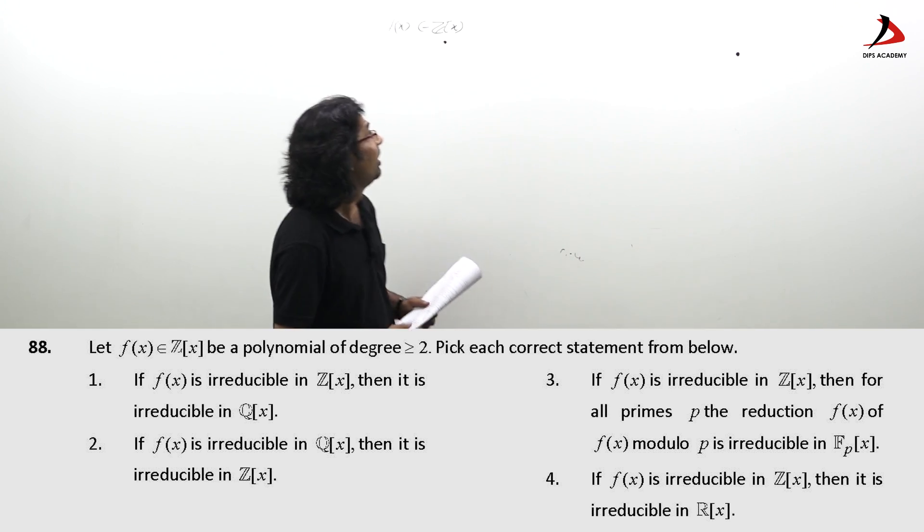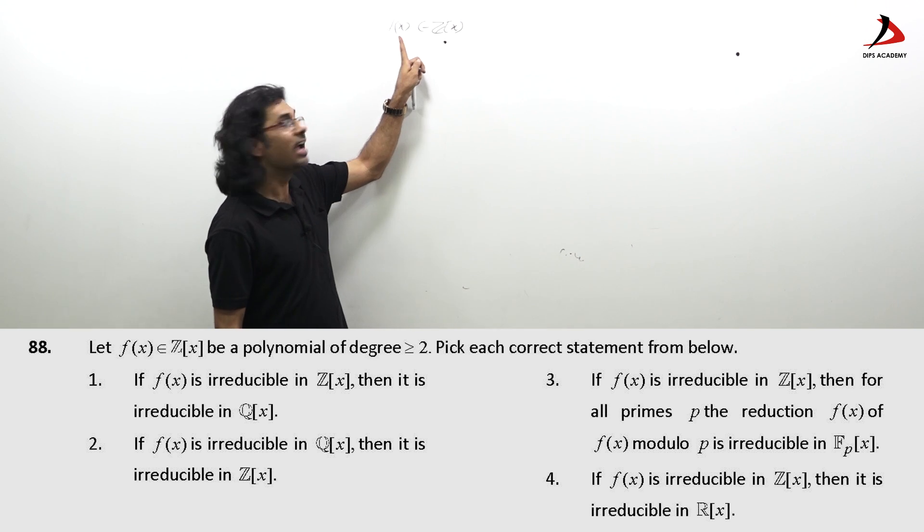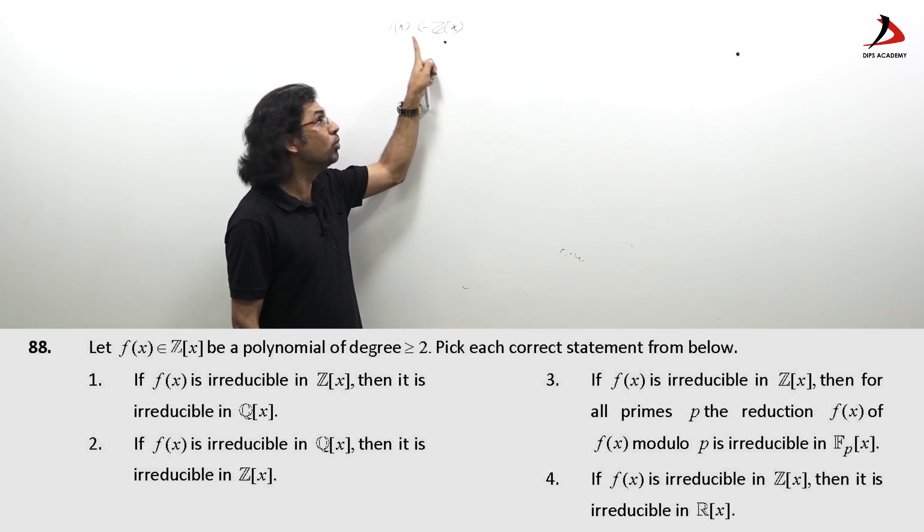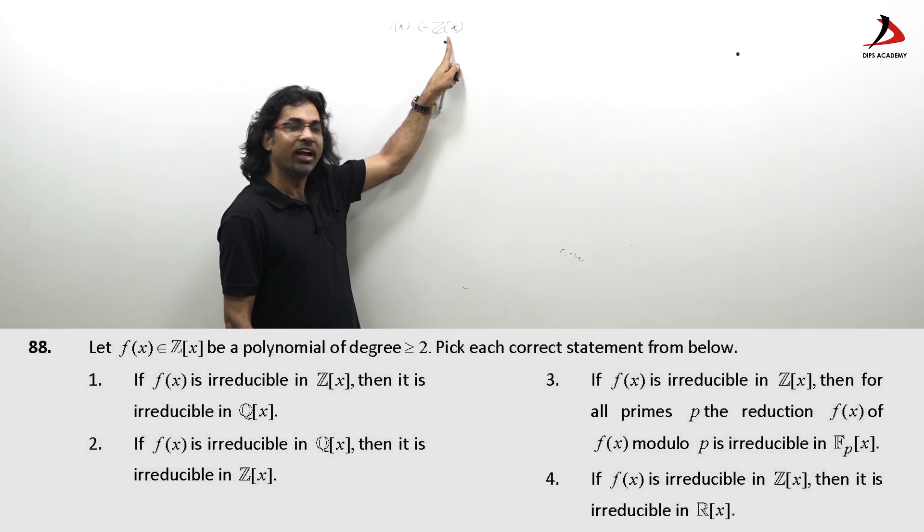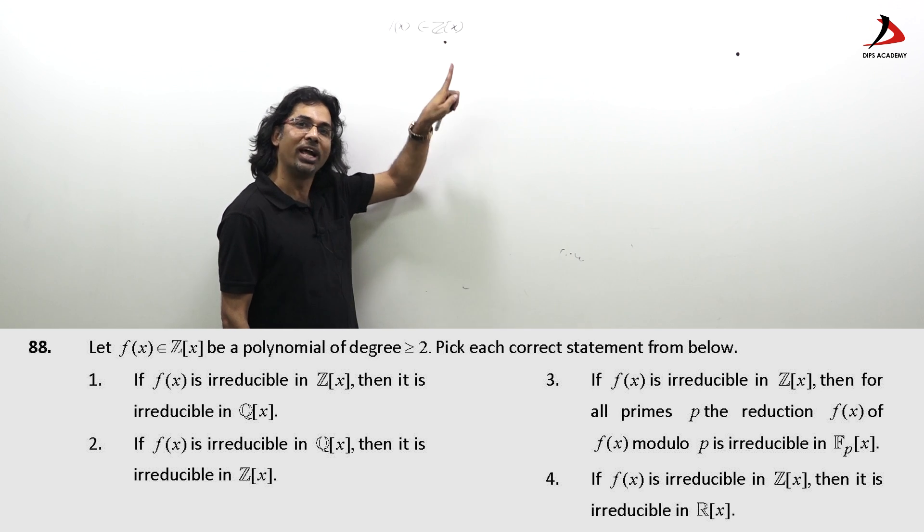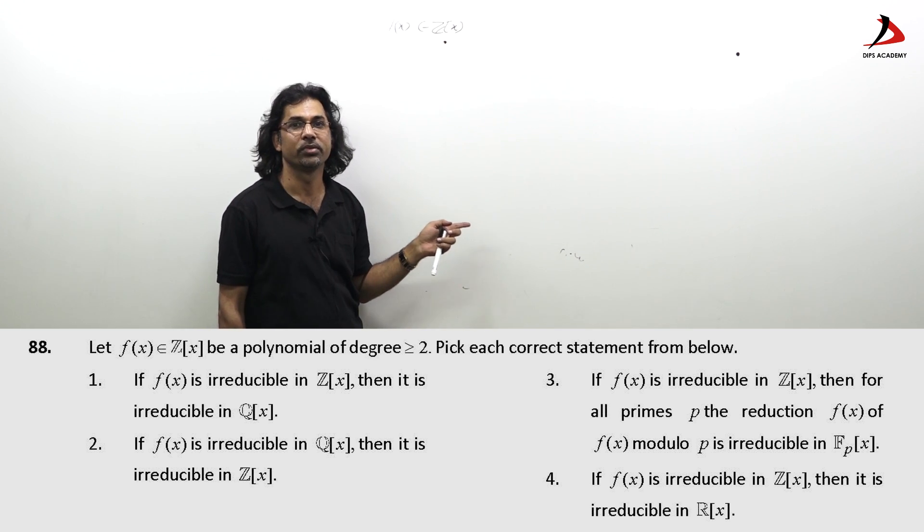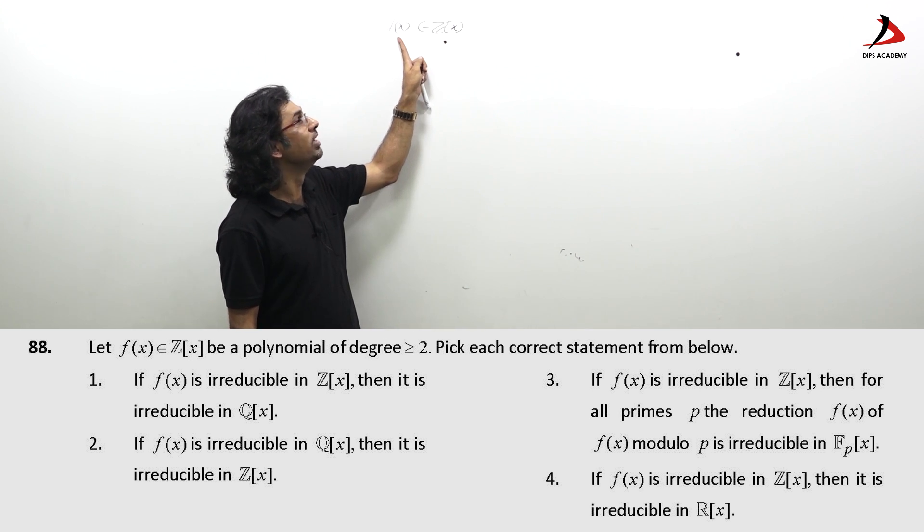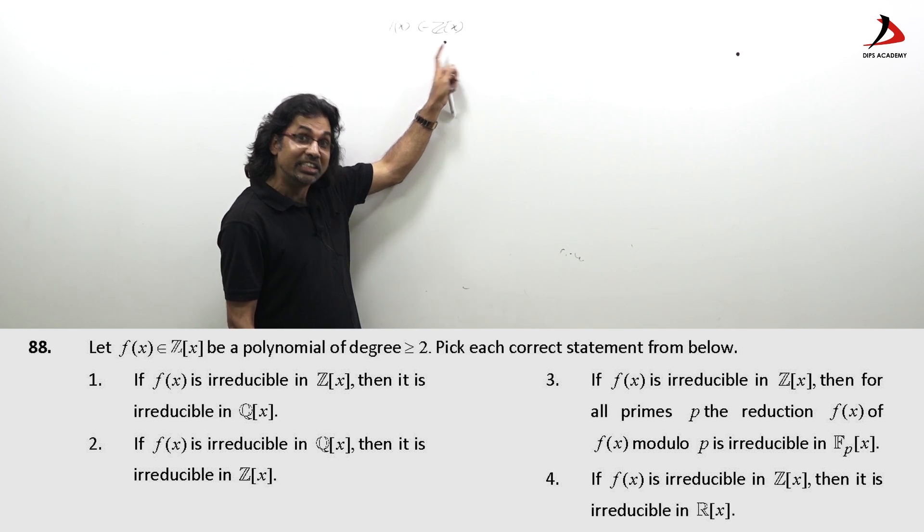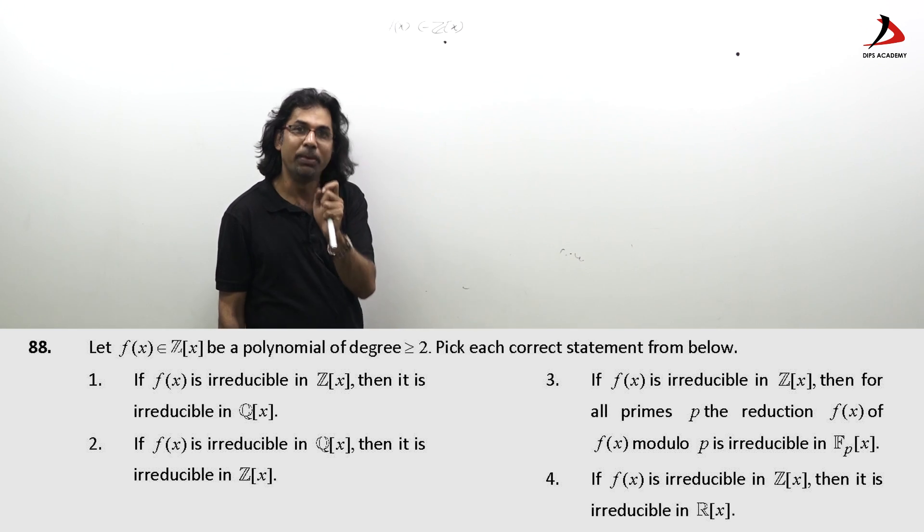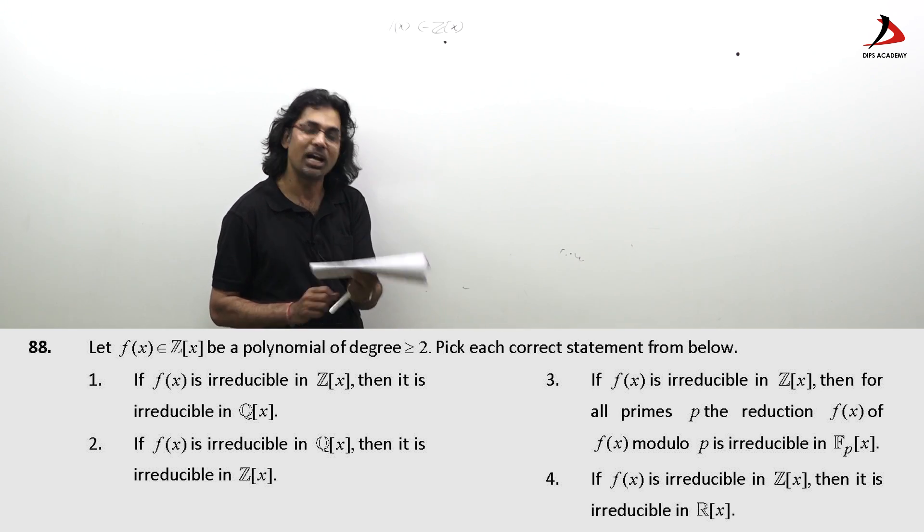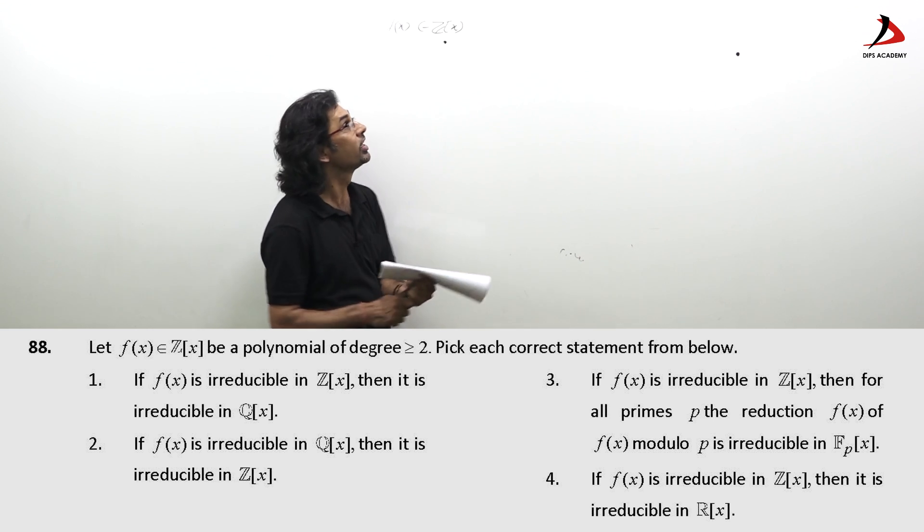Here, my claim is, if f(x) is irreducible in Z[x], it is irreducible in Q[x] and conversely, if f(x) is irreducible in Z[x], then it is irreducible in Q[x] is a big deal and that the queries are over this option only.